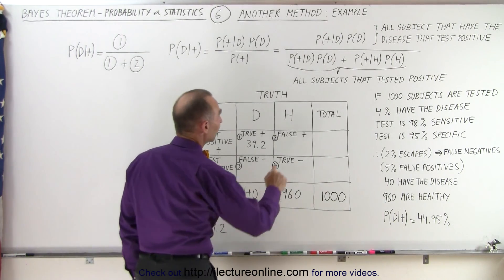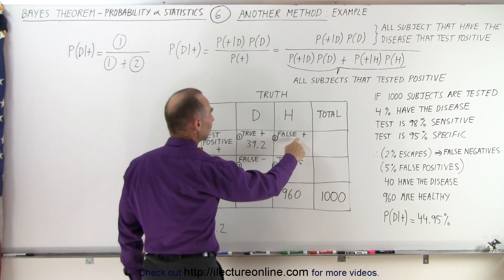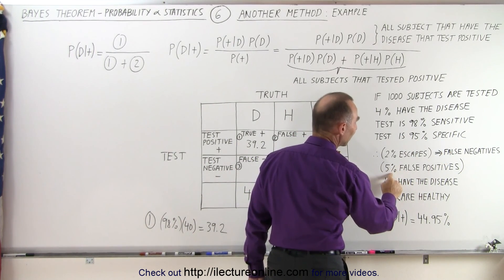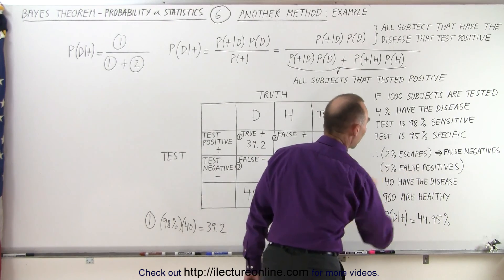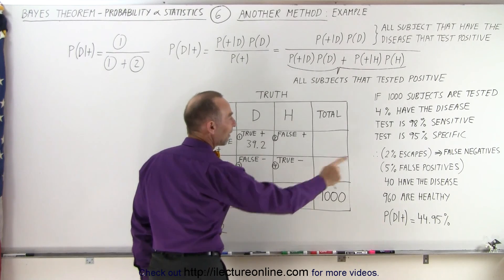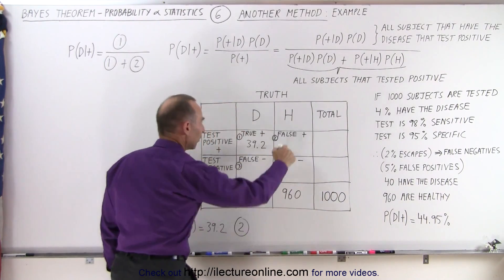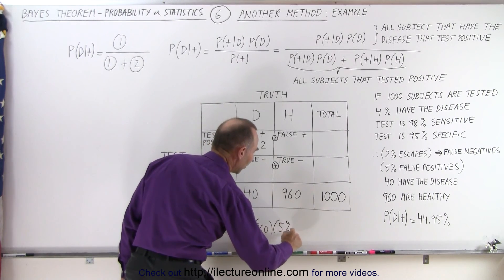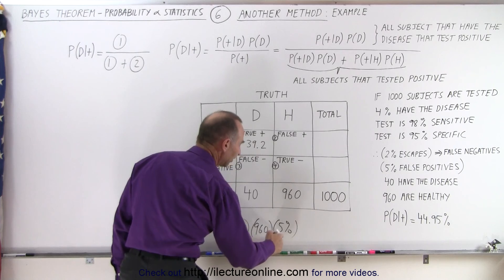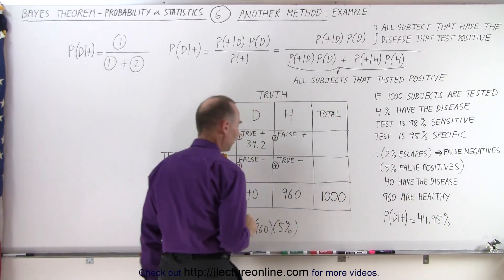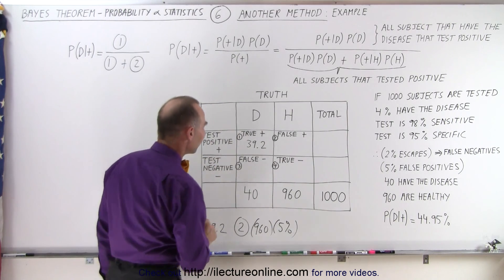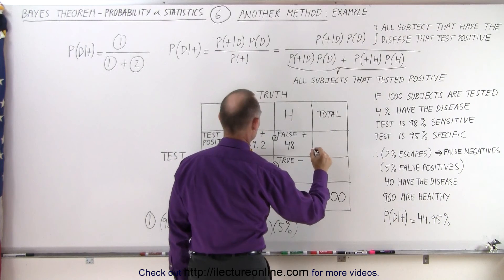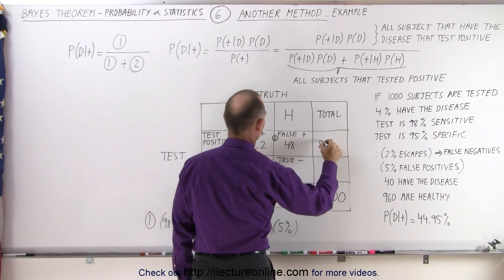Likewise, for those who are healthy and are tested, how many will test positive? Since the test is 95% specific, 5% — that is, 1 minus 95% — will test false positive. So for box number two, we take the 960 healthy subjects and multiply by 5%, because 5% of those who are healthy will test positive since the test is 95% specific. 5% of 960 is 48, so 48 will test positive.